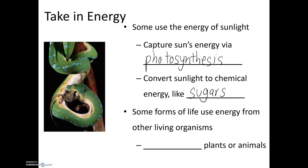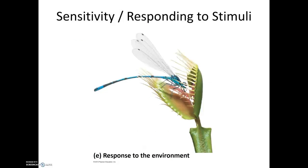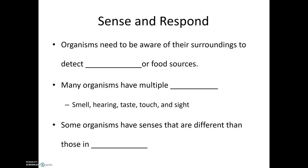Organisms that are not able to photosynthesize need to get their energy from another source, which usually comes through the consumption of other organisms — they need to consume other plant or animal material. Because of this danger, organisms also need to be aware of their surroundings and their environment, both for protection and as sources of food. So sensitivity, or responding to stimuli, is another characteristic of life — organisms need to be aware of their surroundings to detect danger or food sources.